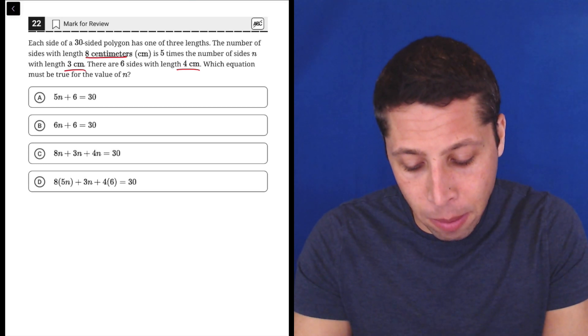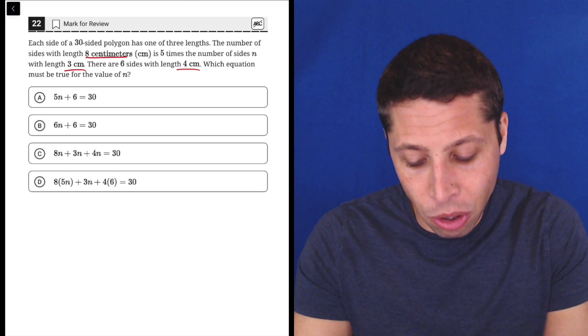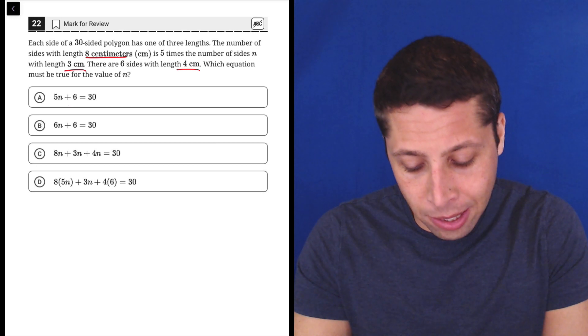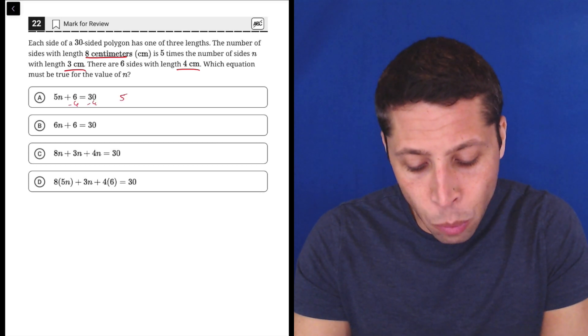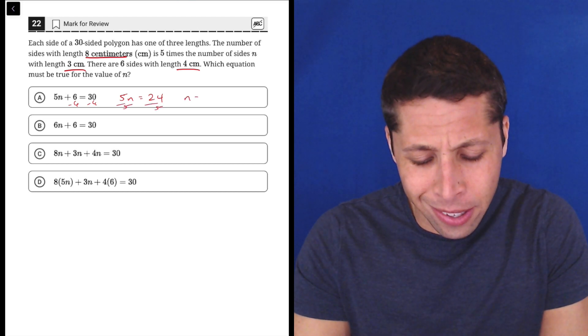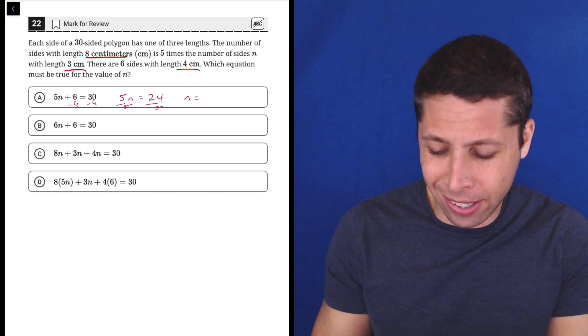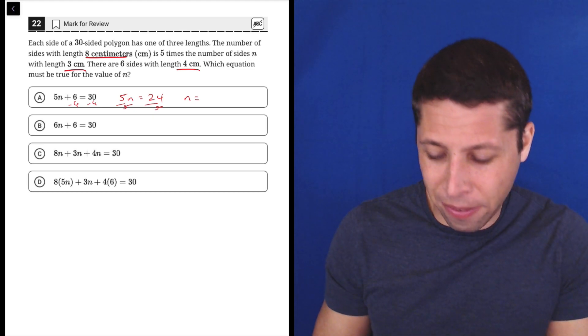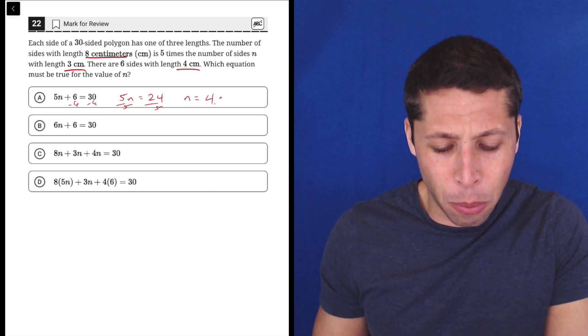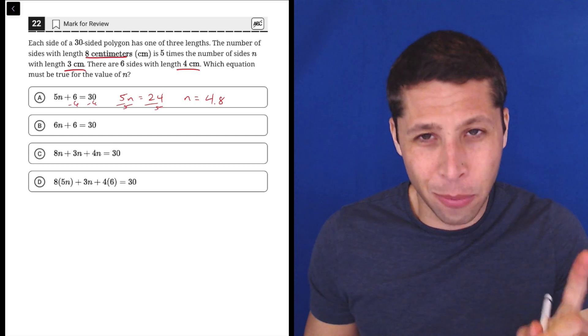If we just took 5n plus 6 equals 30, that's minus 6 from both sides. We get 5n is equal to 24. And then we would divide by 5. So wait a minute here. n is 24 divided by 5. n is 4.8.